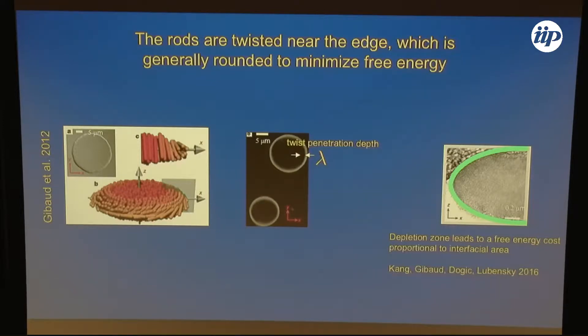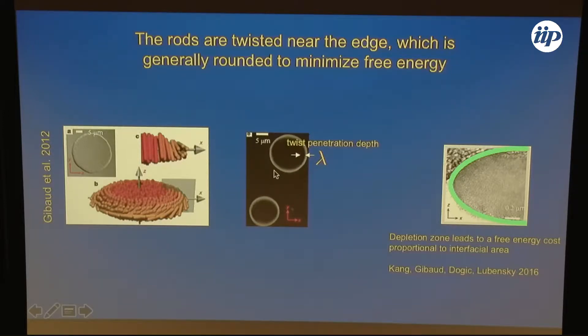They have an interesting liquid crystalline structure. The rods in the middle are more or less parallel and perpendicular to the surface, but as you get to the edge, they twist. You can visualize the twist — there's a twist penetration depth. The twist can't penetrate into a flat layer. The twist penetration depth is typically around half of a micron.